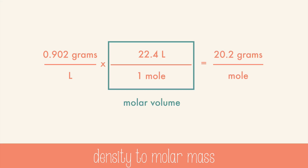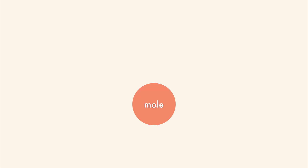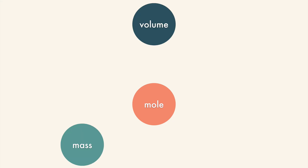Sometimes it helps to make a roadmap to understand these different conversions. This map is sometimes called Mole Island, but it's just a tool for understanding conversions. At the center is the mole, but it can be converted to mass, volume, and particles. To convert between moles and mass, you need to know the molar mass from the periodic table.